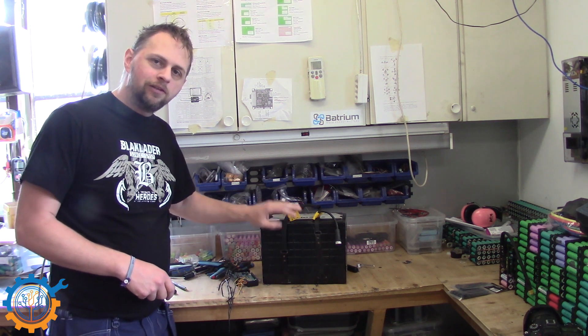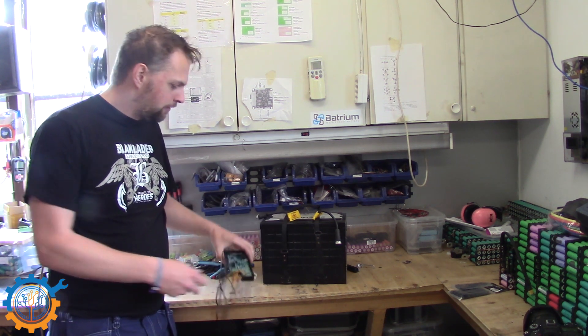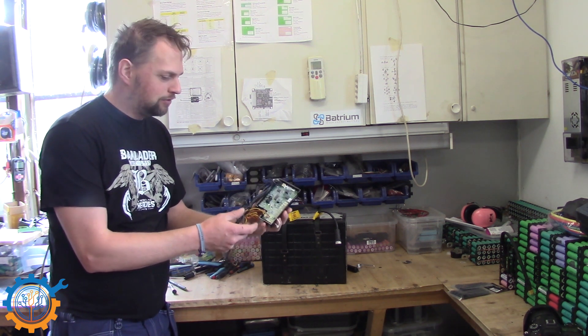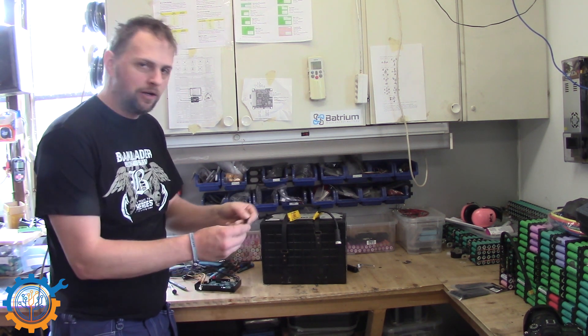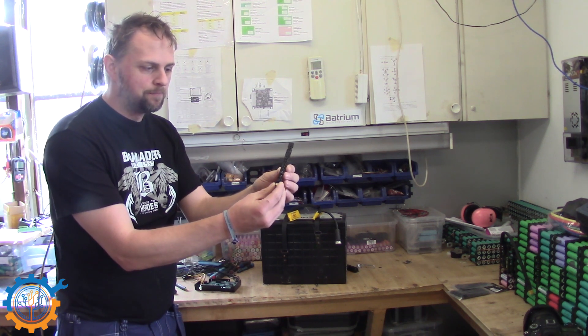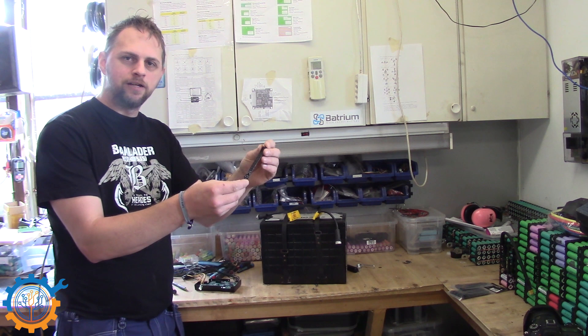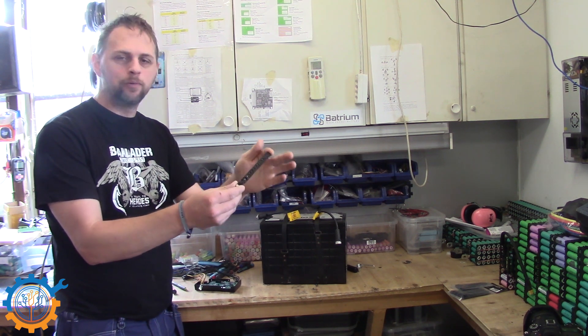What we are going to do today is take this battery, throw out this old BMS unit that is inside it and replace it with 4 of these - the Batrium Longmons. So let's start and pick the battery apart and see what we can do about it.